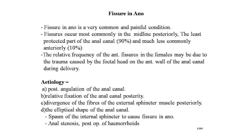In males, fissure usually occurs in the midline posteriorly 90% of the time, and much less commonly anteriorly at 10%. In females, fissures in the midline posteriorly are slightly more common than anteriorly, at a 60 to 40 ratio. The relative frequency of anterior fissures in females may be explained by the trauma caused by the fetal head on the anterior wall of the anal canal during delivery.